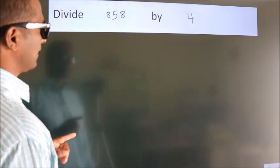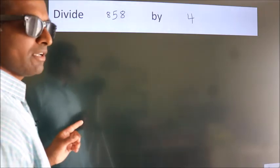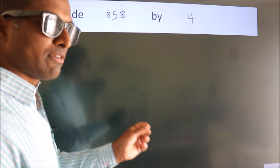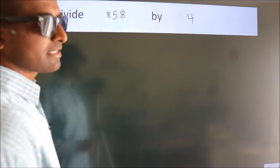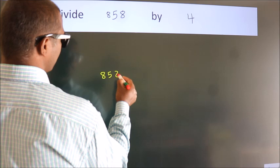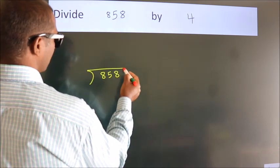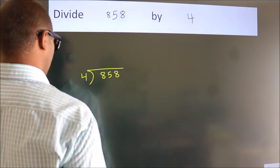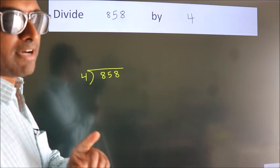Divide 858 by 4. To do this division, we should frame it in this way: 858 here, 4 here. This is step 1.